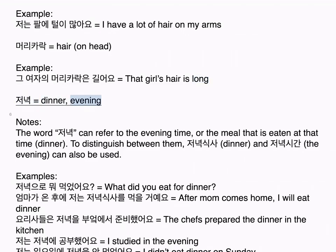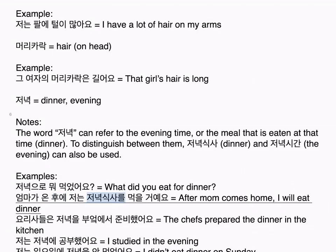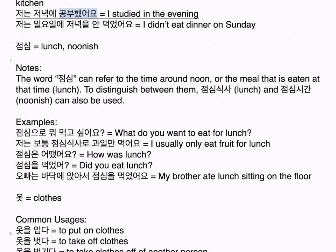저녁 means dinner or evening. Notes: The word 저녁 can refer to the evening time or the meal eaten at that time (dinner). To distinguish between them, 저녁 식사 means dinner and 저녁 시간 means the evening. Examples: 저녁으로 뭐 먹었어요? What did you eat for dinner? 엄마가 온 후에 저는 저녁 식사를 먹을 거예요. After mom comes home, I will eat dinner. 요리사들은 저녁을 부엌에서 준비했어요. The chefs prepared the dinner in the kitchen. 저는 저녁에 공부했어요. I studied in the evening. 저는 일요일에 저녁을 안 먹었어요. I didn't eat dinner on Sunday.